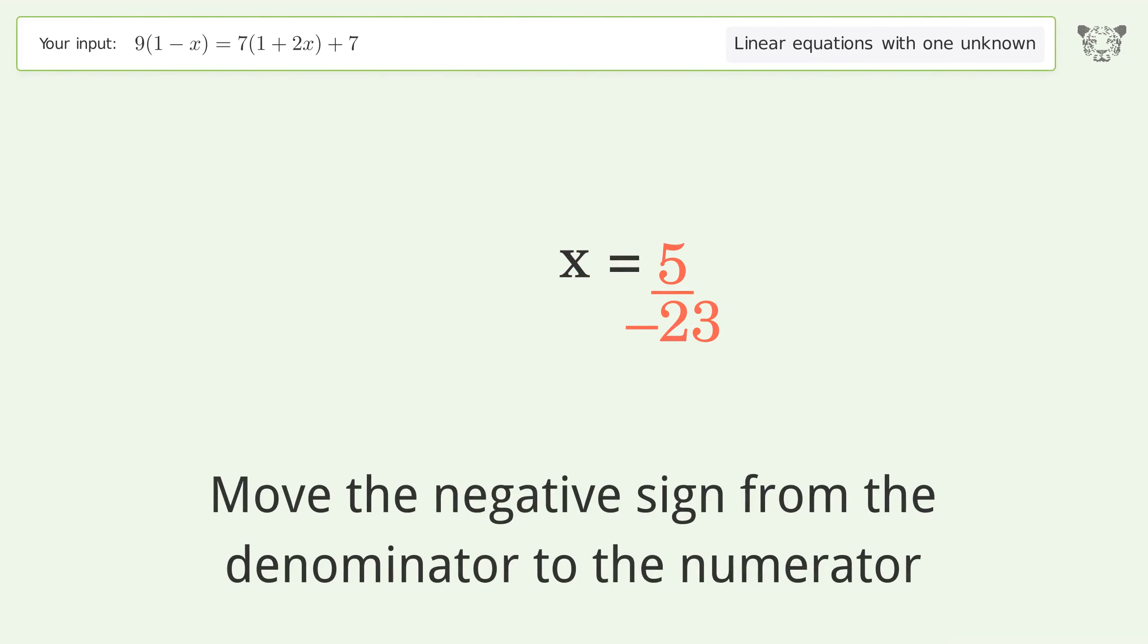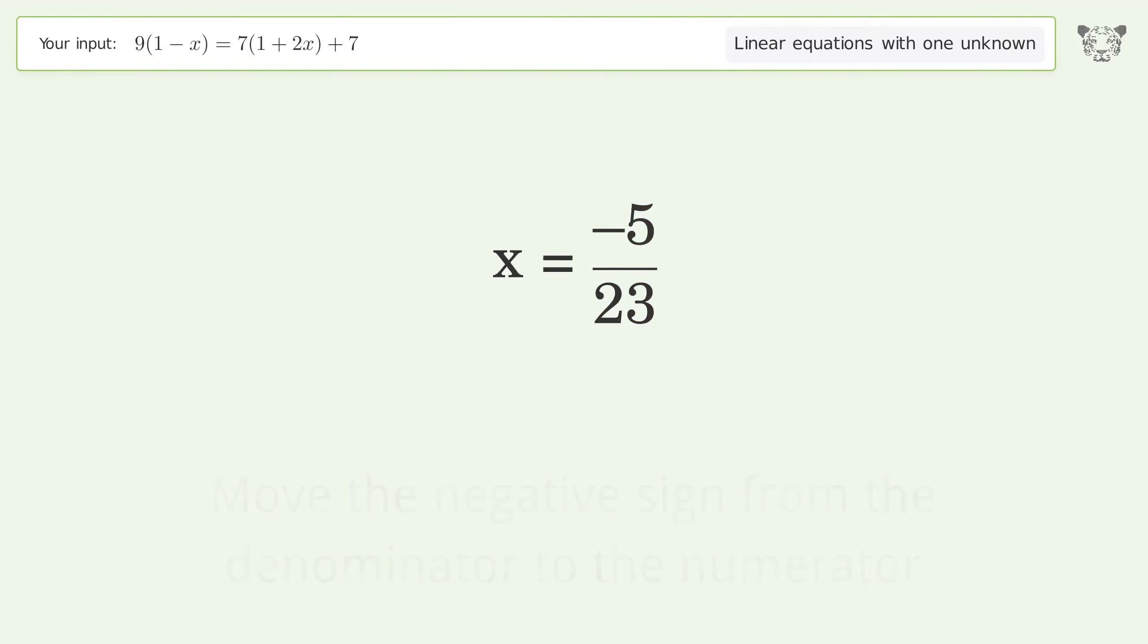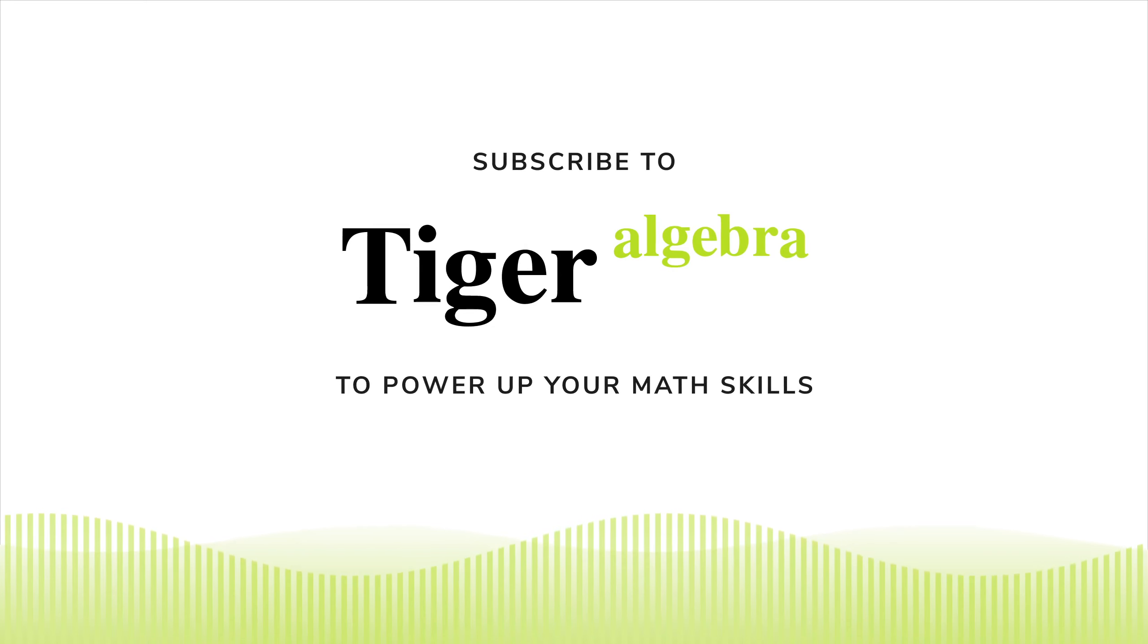Move the negative sign from the denominator to the numerator. And so the final result is x equals negative 5 over 23. Thank you.